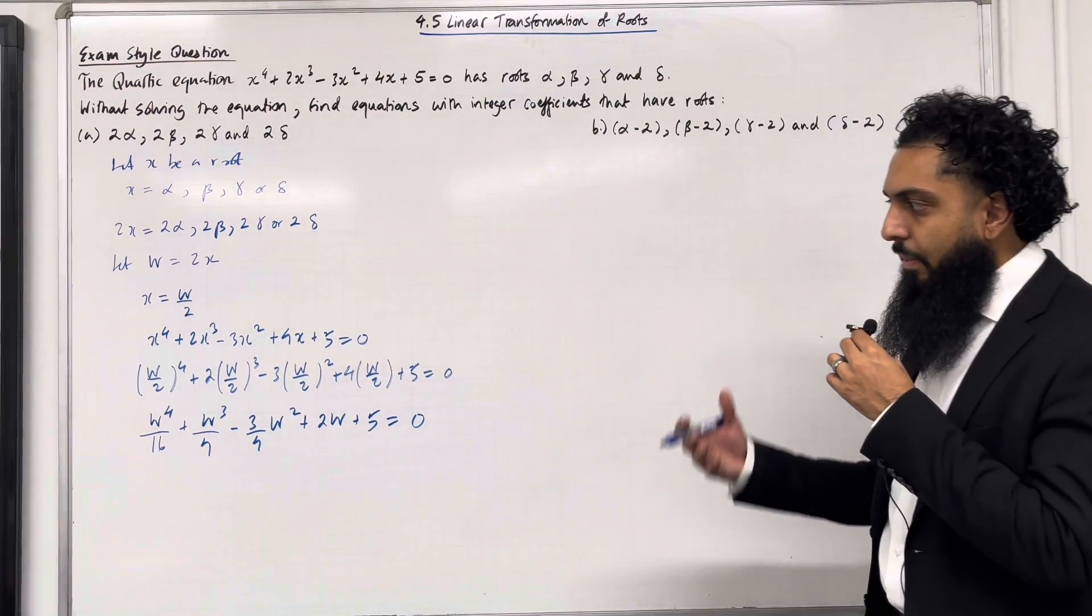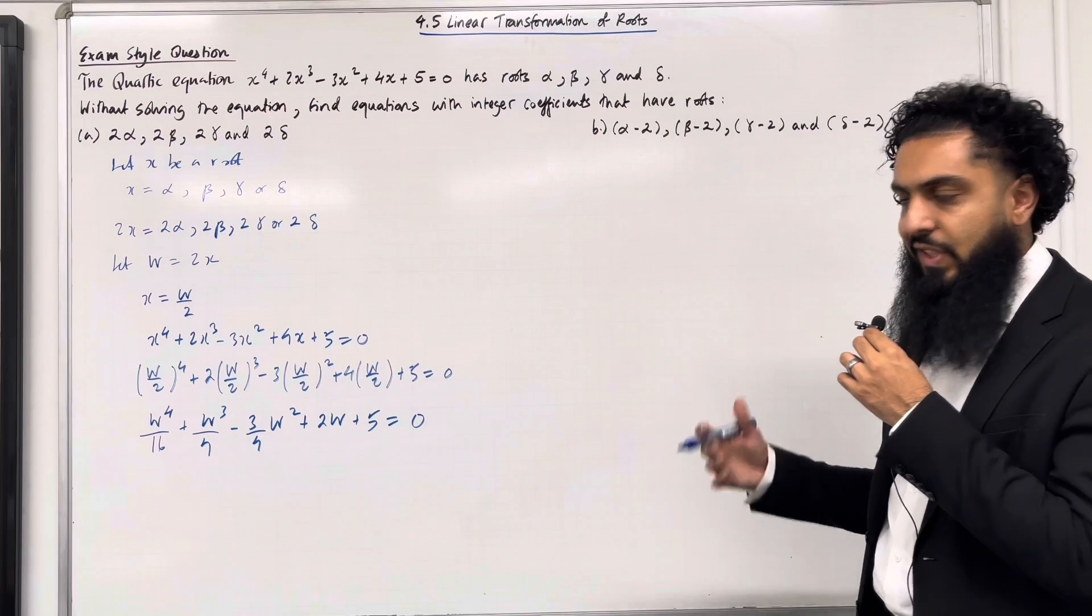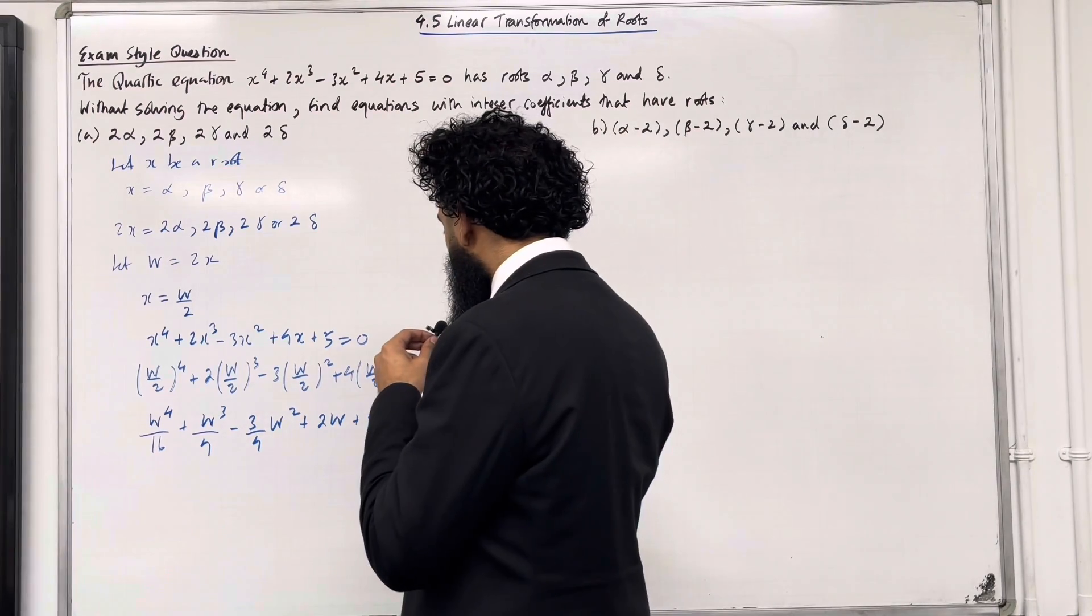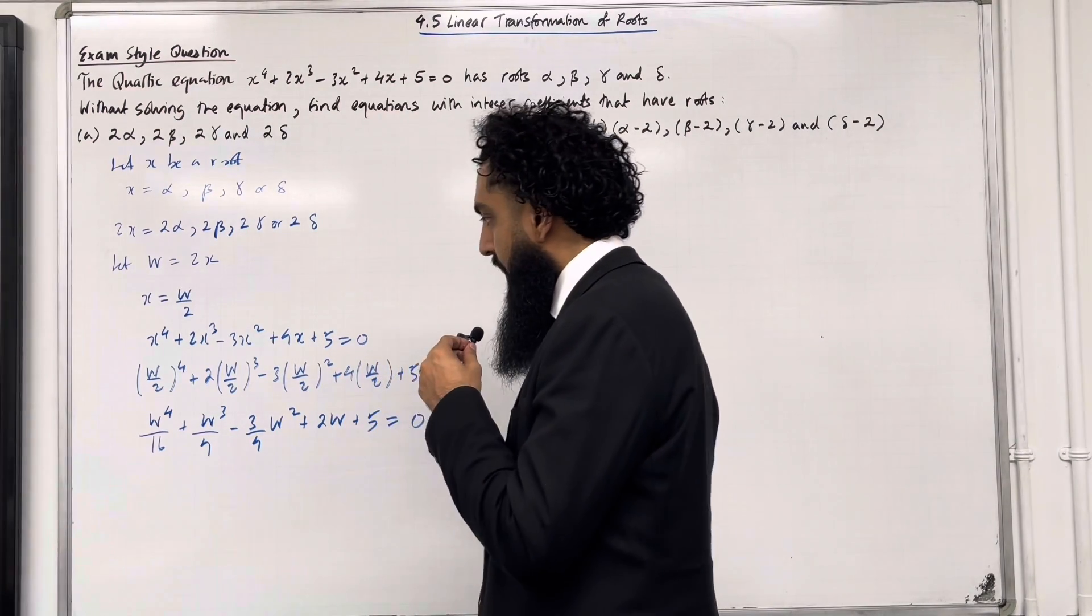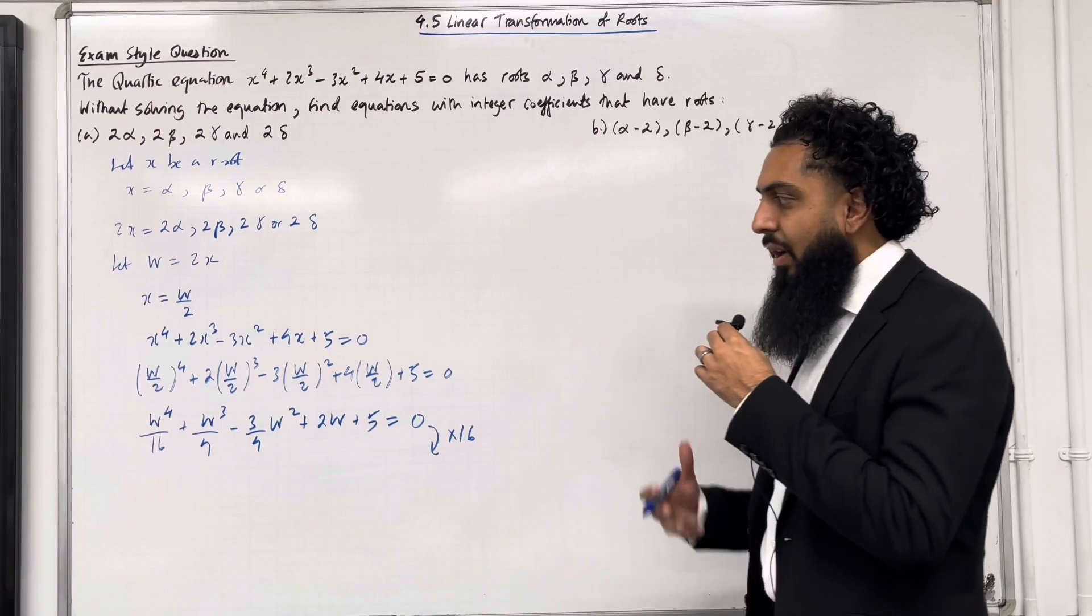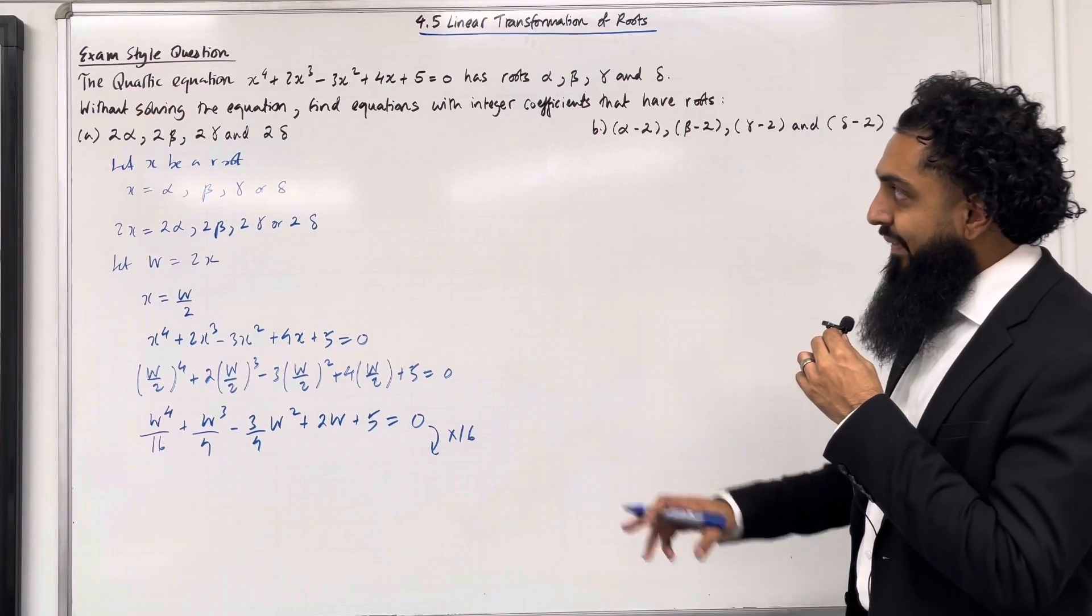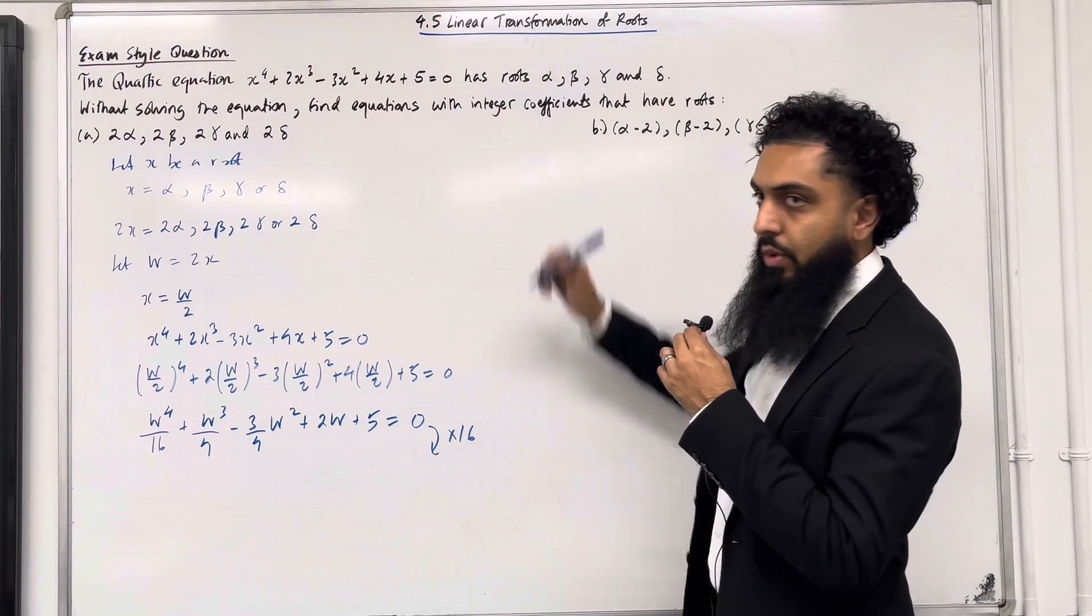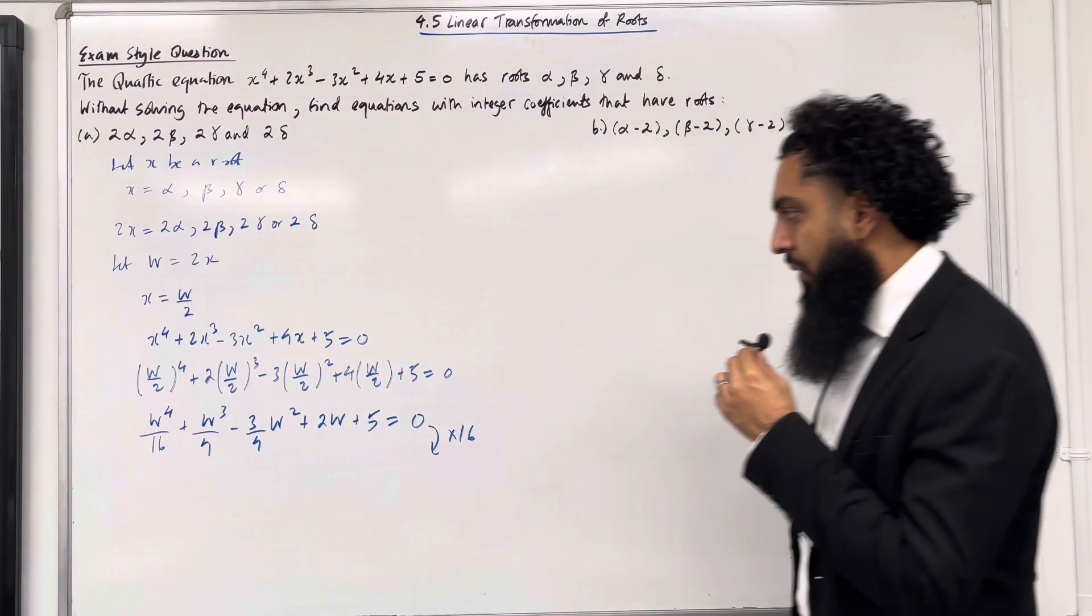Now I can multiply the entire equation by 16, and this will give me a new polynomial in terms of w with the coefficients in integer form.